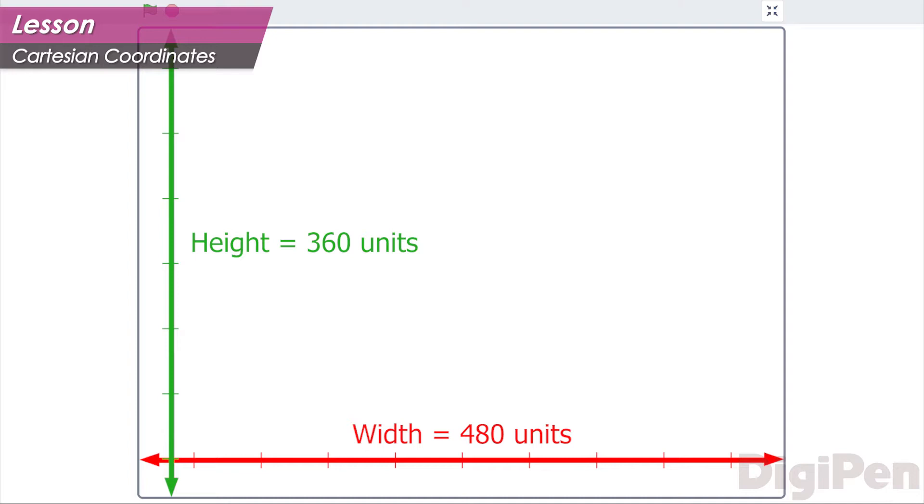We can get these two numbers using the Cartesian coordinate system, which allows us to visualize the game screen as a two-dimensional space.